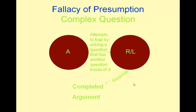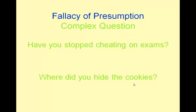Another fallacy of presumption is called the complex question — a question inside of a question. The arguer attempts to trap the listener with a question that has another question embedded inside it. For example: 'Have you stopped cheating on your exams?' If you answer yes or no, you're still in trouble. There are really two questions in one: 'Do you cheat on your exams?' and 'Have you stopped cheating on your exams?'